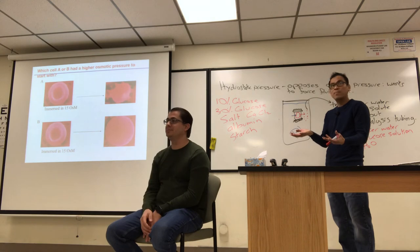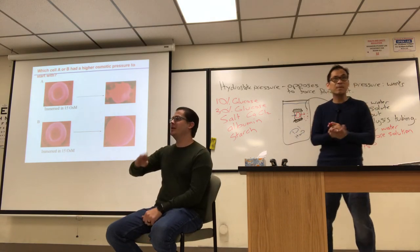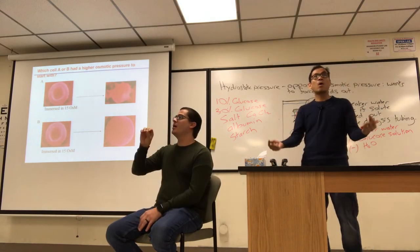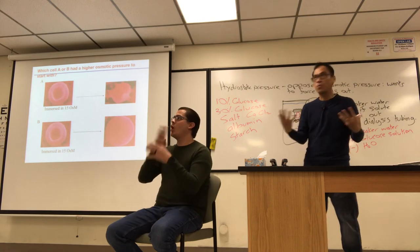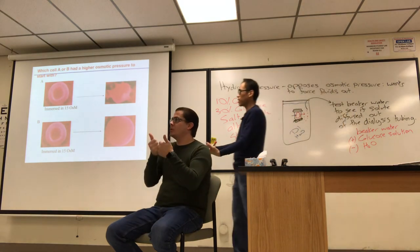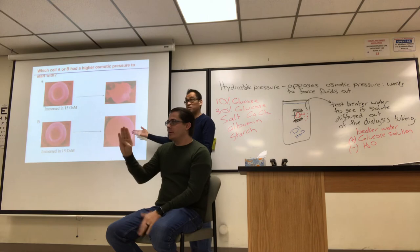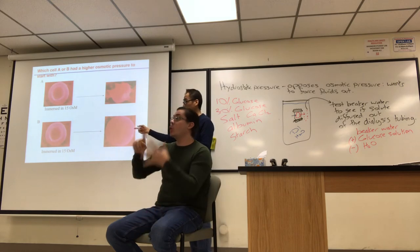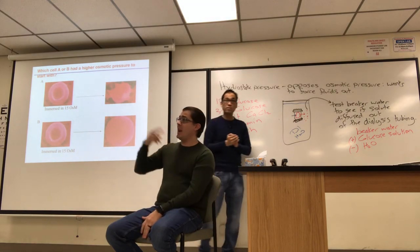Mostly B's. The definition of osmotic pressure is the ability to draw water into yourself. Which one drew water into itself? B did. So to start with, B had the higher osmotic pressure.